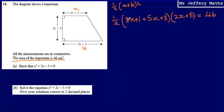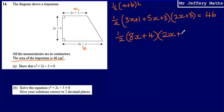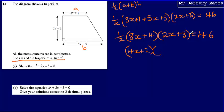Now we simplify this equation to make it look like x squared plus 2x minus 5 equals 0. First, tidy up the bracket: 3x plus 1 plus 5x plus 3 gives 8x plus 4. So we now have half of (8x plus 4) times (2x plus 3) equals 46. Halving 8x plus 4 gives 4x plus 2, so the equation becomes (4x plus 2) multiplied by (2x plus 3) equals 46.